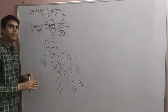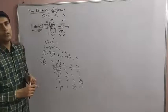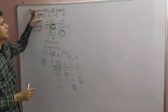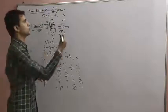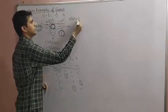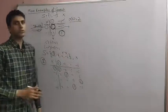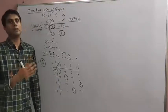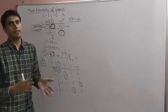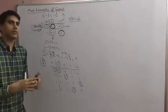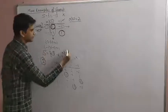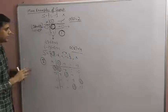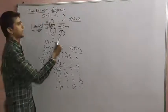S' is also a finite abelian group. Now we introduce the order of a group. The order of a group means the number of elements in the group. S has 2 elements so its order is 2. S' has 4 elements so its order is 4.